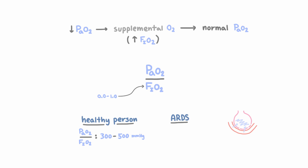The diagnosis of ARDS requires, in addition to other clinical parameters, a ratio of PaO2 to FiO2 of less than or equal to 300 millimeters of mercury.